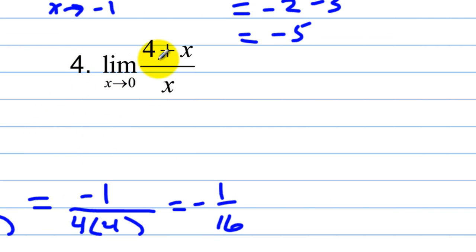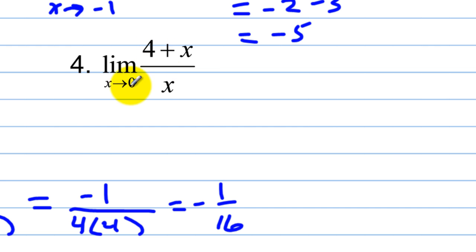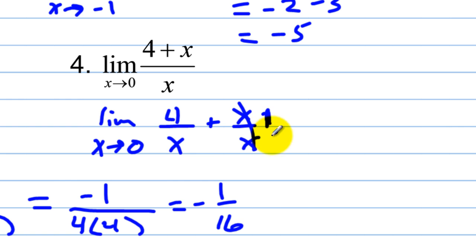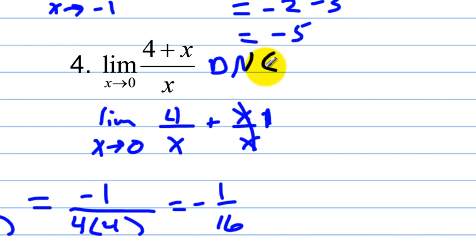On number 4, we have the limit as x approaches 0 of (4 + x) over x. If we plug 0 into the denominator it stays 0 — that's bad. There's no way to cancel out this denominator because of addition. One technique we might try is a reverse common denominator, splitting into 4/x plus x/x, but that still leaves 0 in the denominator. So this limit does not exist.